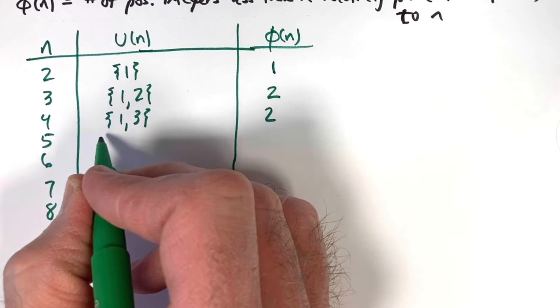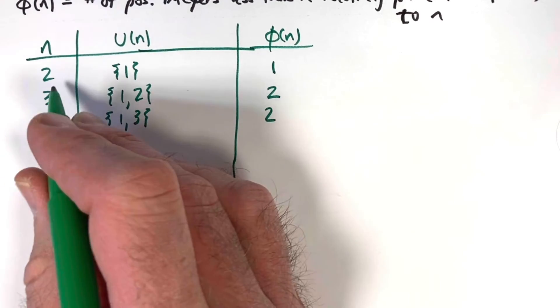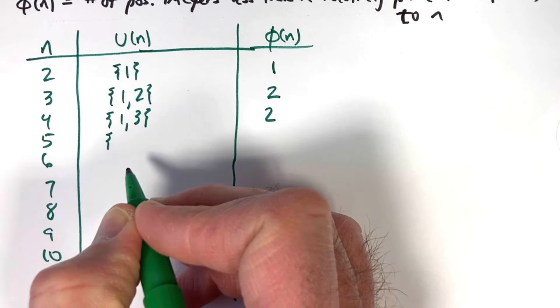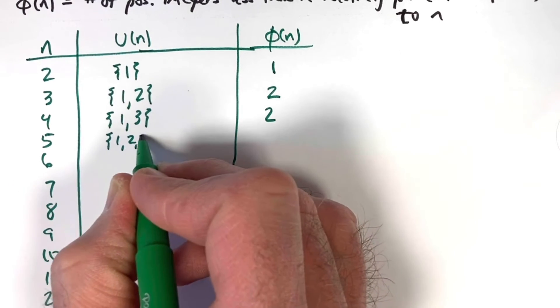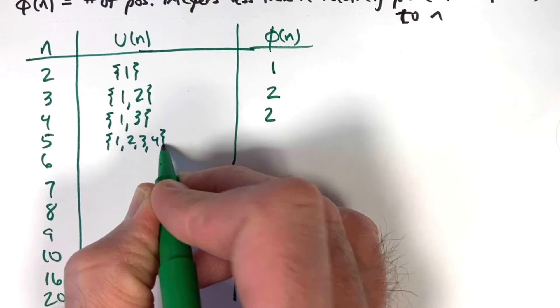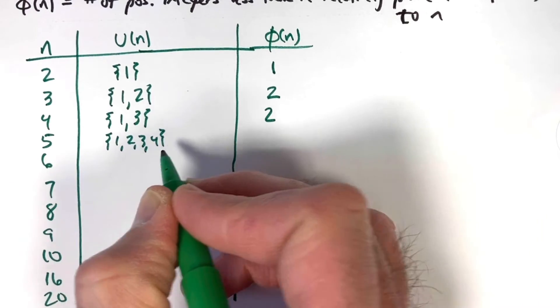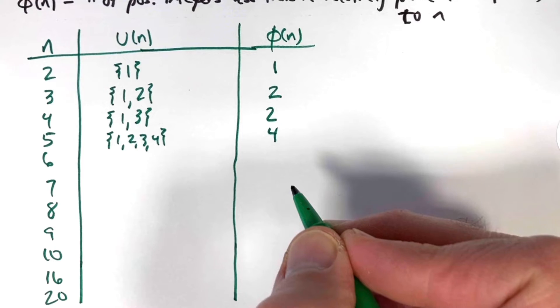When n = 5, which is prime like 2 and 3, we want positive integers less than 5 that do not have 5 as a prime factor. Well, that will be all of them: 1, 2, 3, 4. How many are there? Four of them. Therefore, φ(5) = 4.